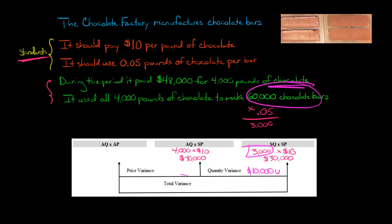If you're curious about the total variance, we'd also need the price variance. We paid $48,000 actual versus $40,000 at standard price, so the price variance is $8,000 unfavorable. You can calculate the total variance this way when materials used and materials purchased are the same — that gives us $18,000 unfavorable total variance. But again, the quantity variance specifically is $10,000 unfavorable.